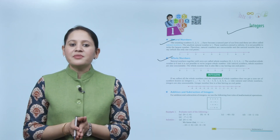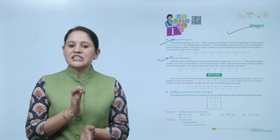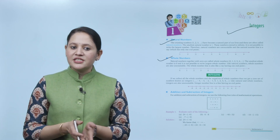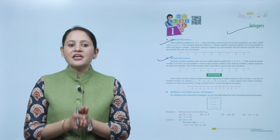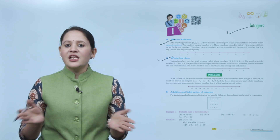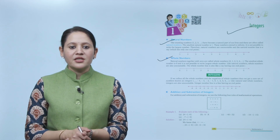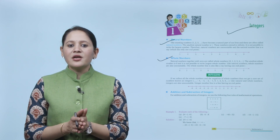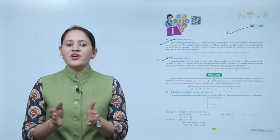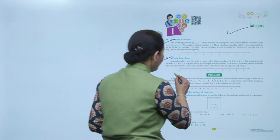Next, whole numbers. Natural numbers together with 0 are called whole numbers: 0, 1, 2, 3, 4, and so on. The smallest whole number is 0, and it is not possible to write the largest whole number. Like natural numbers, whole numbers are also uncountable. The whole number line is also like a ray having one endpoint. So these are whole numbers.